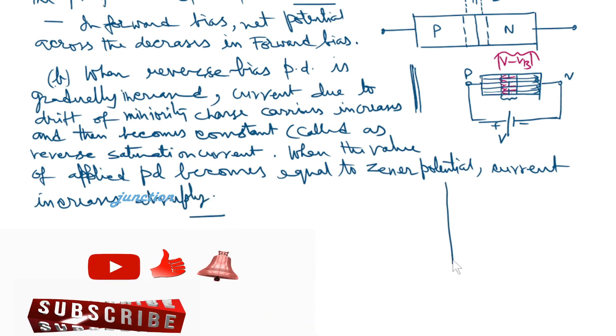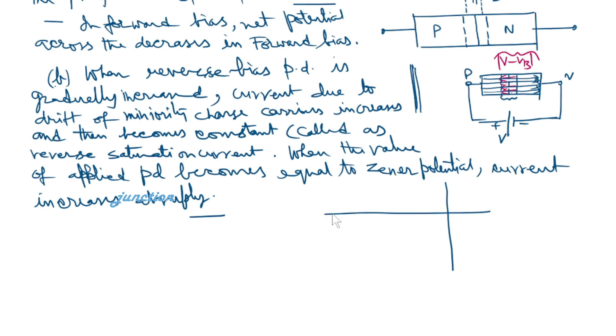This is the graph in reverse bias. This is potential difference and this is current. Current in reverse bias is of the order of microampere. Current first increases very slowly then becomes constant. This constant current is termed reverse saturation current. For a particular value of applied voltage V equals Vz, current abruptly increases to very high value.